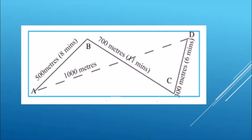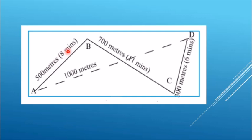Let's understand velocity and speed with an example. There is a boy named Ranjit who stays at point A — here is his house — and at point D is his school. If he has to reach school, he can either go directly from A to D which is 1000 meters, or he can go via points B and C and then reach point D. Taking the longer route: A to B is 500 meters in 8 minutes, B to C is 700 meters in 11 minutes, and C to D is 300 meters in 6 minutes. Now let us calculate the velocity and speed for Ranjit.